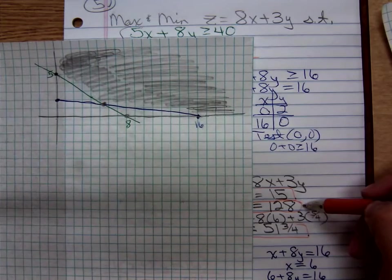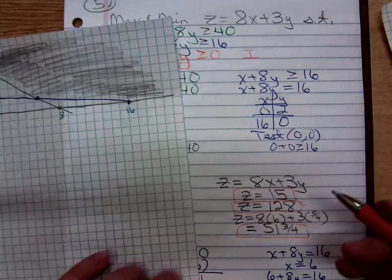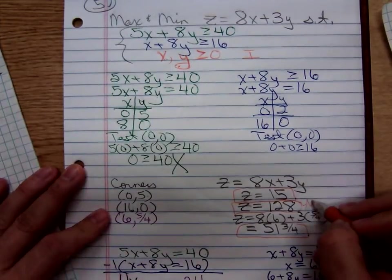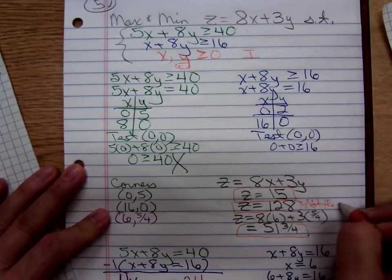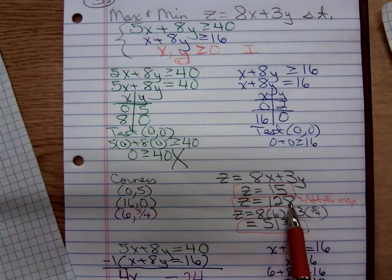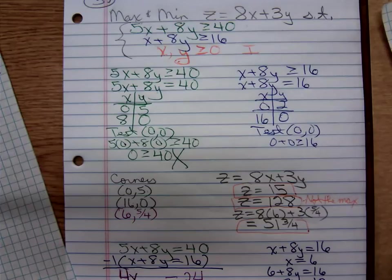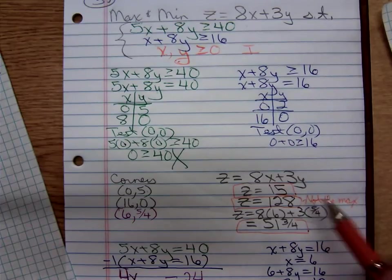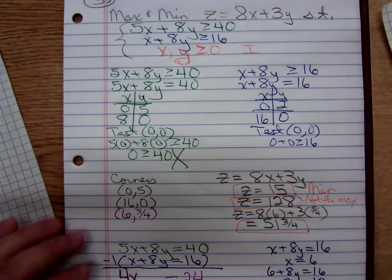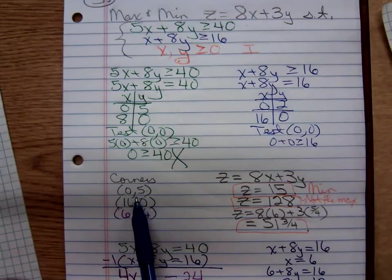Sure, 100, 100 would give you 1100. So, 128, this is you thinking to yourself. You think to yourself, 128 is not the max. That is not the maximum. And if 128 is not the maximum, that means the minimum has to exist. So, what's the minimum value? The minimum value is 15. The minimum value of Z is 15. And it occurs at the corner point 0, 5.